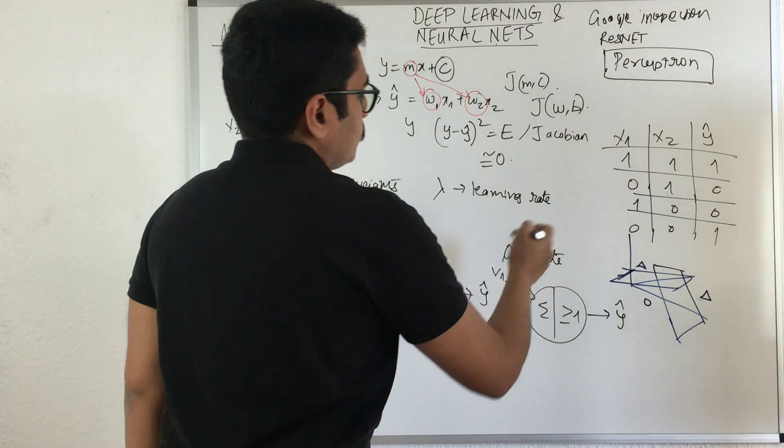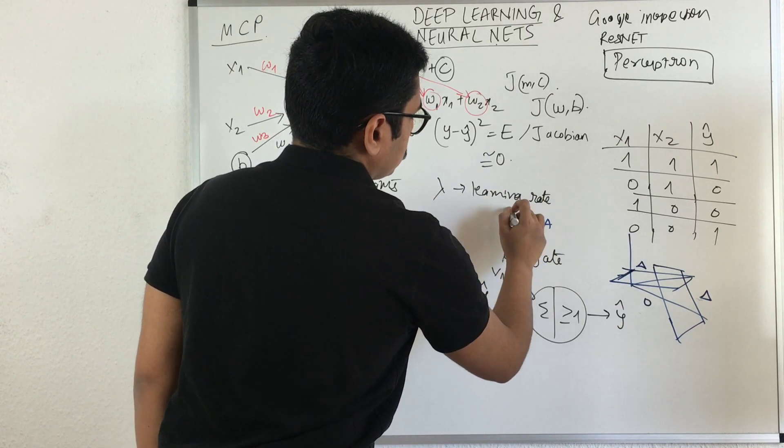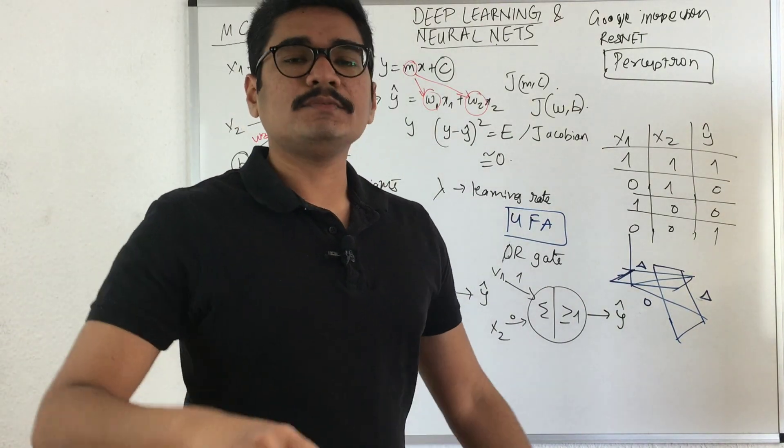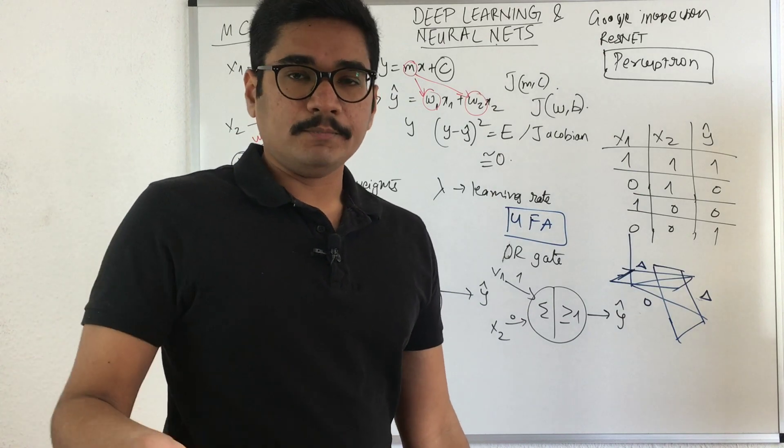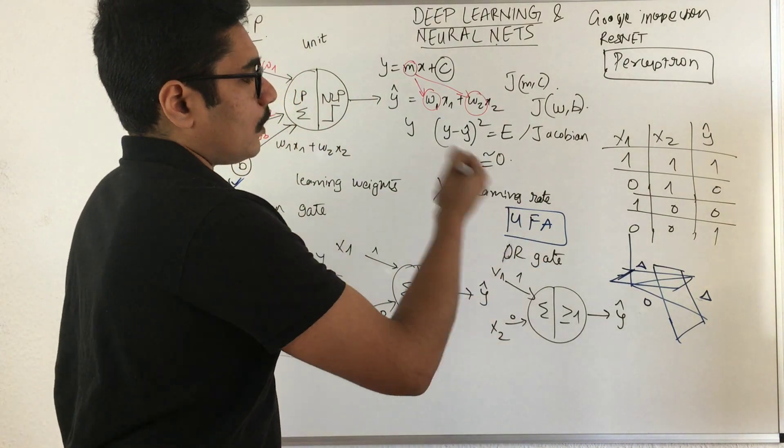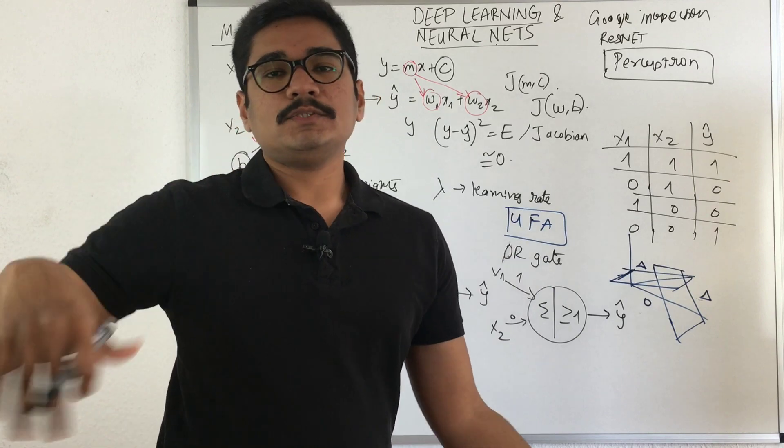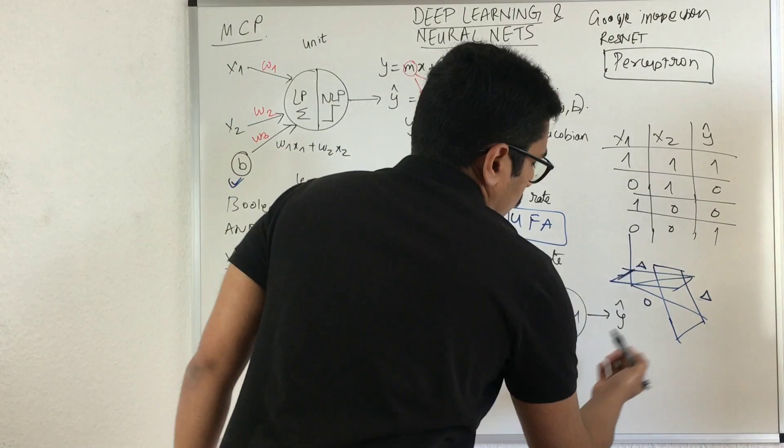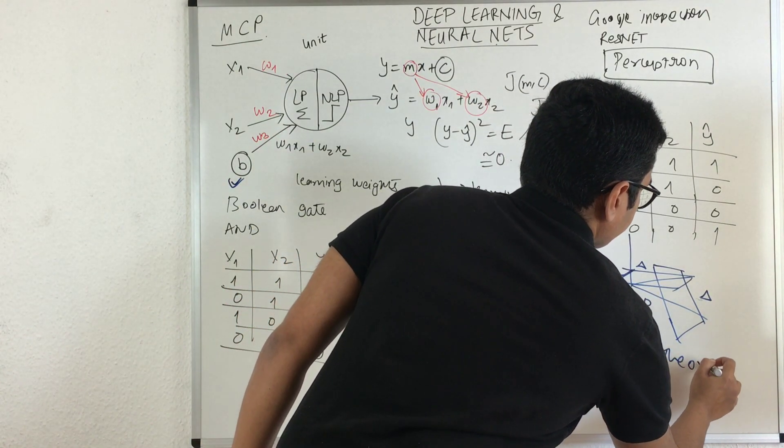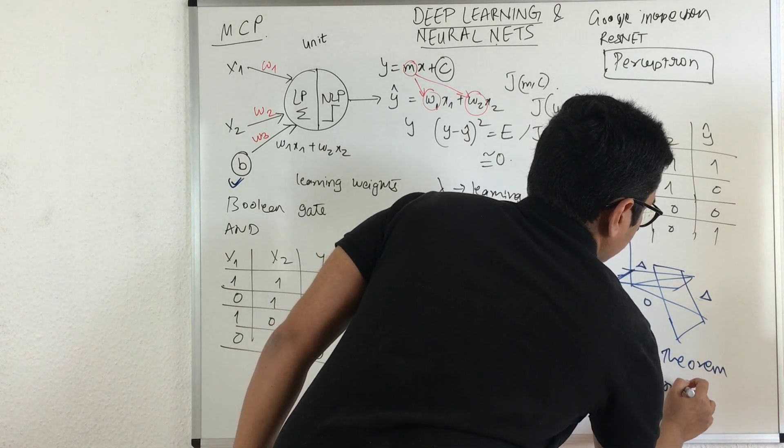These neural networks or artificial neural networks are also called universal function approximators. Whenever you have n number of instances which are not separable in lower dimension, they are projected to higher dimension. This power of neural networks to project points from lower dimension to higher dimension comes from two theorems in mathematics: Cover's theorem and Kolmogorov theorem.